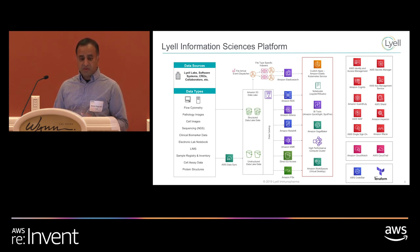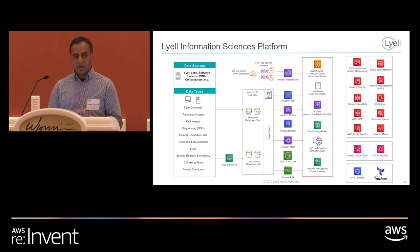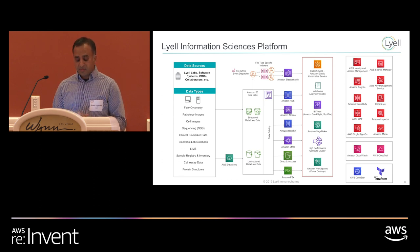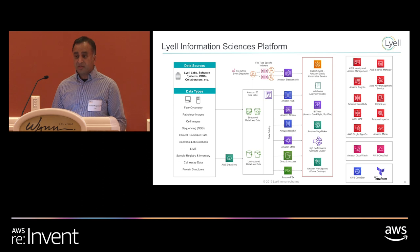We are building a number of custom applications, running on EKS, which is Amazon's managed Kubernetes service. We have a lot of use cases requiring lots of compute, which is why we have things like Athena, Redshift, and EMR. But we also have a high performance compute cluster, and that's really what I'm going to spend the rest of this talk about.